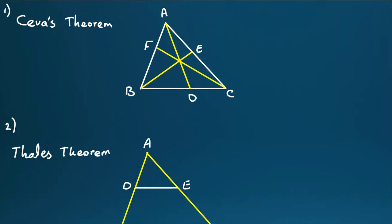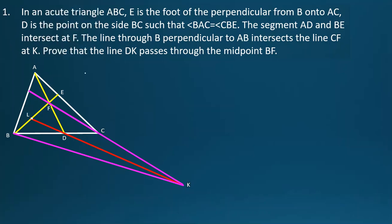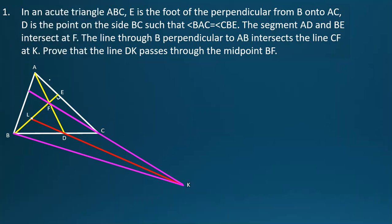So let's jump into the problem. The problem says in an acute triangle ABC here, E is the foot of the perpendicular from B onto AC. D is the point on the side BC such that angle BAD equals angle CBE. The segment AD and BE intersect at F.